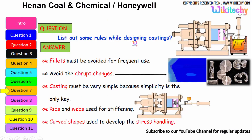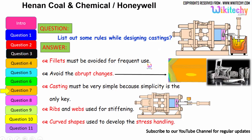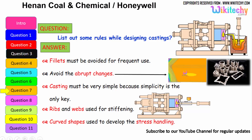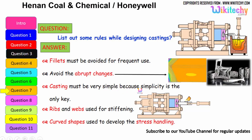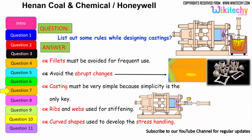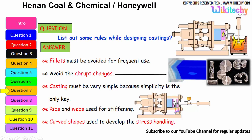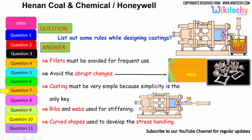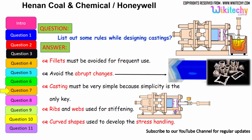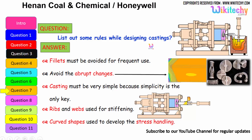Let us see some rules while designing castings. First, fillets must be avoided for frequent use. Second, avoid abrupt changes. Third, casting must be very simple — simplicity is the key. Ribs and whips are used for stiffening, so you should have ribs in the structure. Curved shapes should be used to develop stress handling and avoid stress concentration. These are the rules to follow for castings.